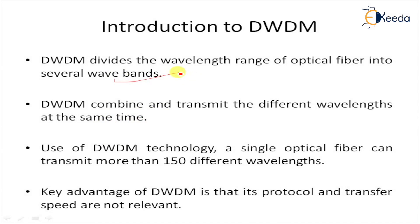WDM can combine and transmit different wavelengths at the same time on the same fiber. This is a key feature of WDM — one fiber is effectively converted into multiple virtual fibers, so a greater amount of data can be transmitted using DWDM.